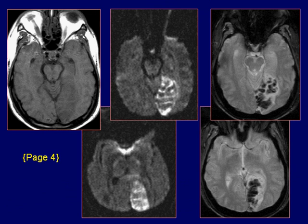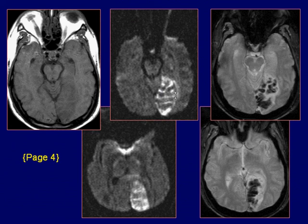T1-weighted image demonstrates mildly hypointense gray-white matter in the left occipital lobe. Diffusion-weighted images demonstrate restricted diffusion in the left occipital lobe.